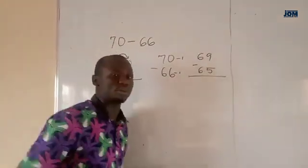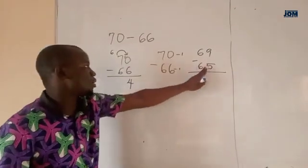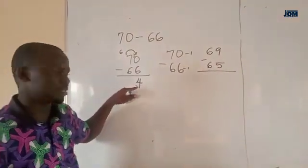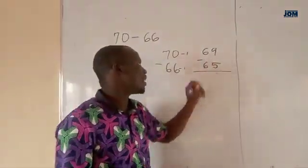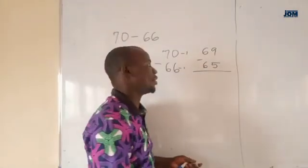Now, do your normal subtraction. You will see that the value that you are going to have here must be the same. So, 9 minus 5. You don't need to borrow anything. 9 minus 5, we all know it's 4.